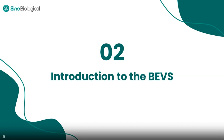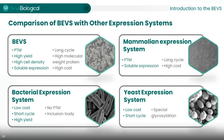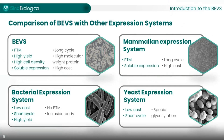We have briefly covered the two major components of the BEVS. Now let me show you how the system works. Before we do that, let's quickly review the common hosts used for recombinant protein expression. Currently, there are four major expression hosts: bacteria, yeast, mammalian cells, and insect cells. Each system is unique. The bacterial expression system uses simple organisms, usually E. coli. The advantages include cost-effectiveness and high yield, but bacteria are unsuitable for proteins that require post-translational modifications.